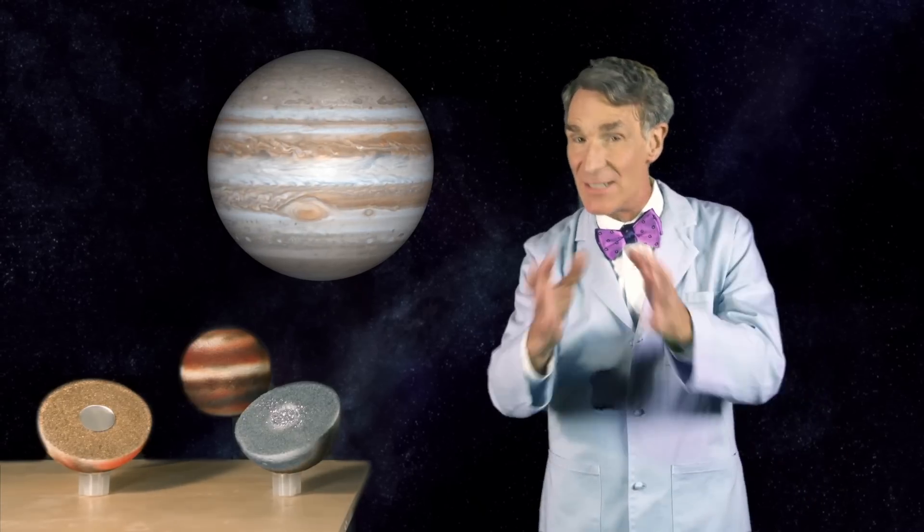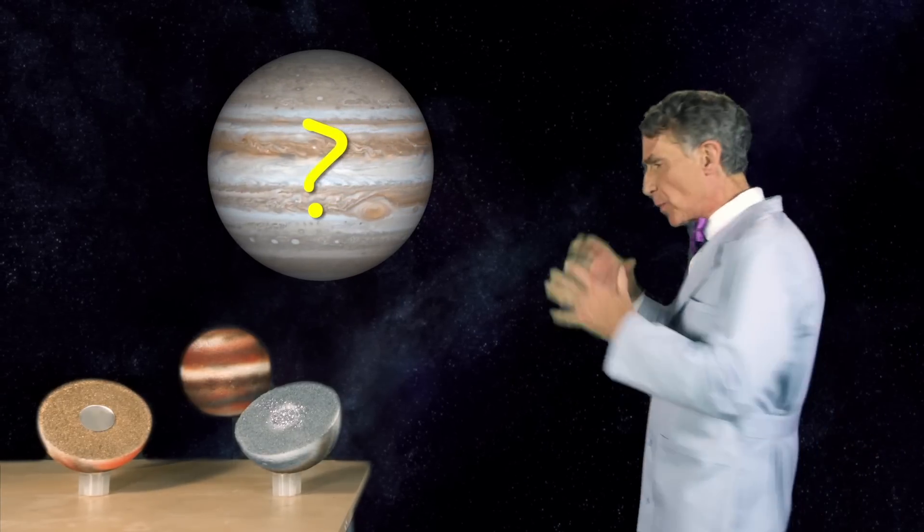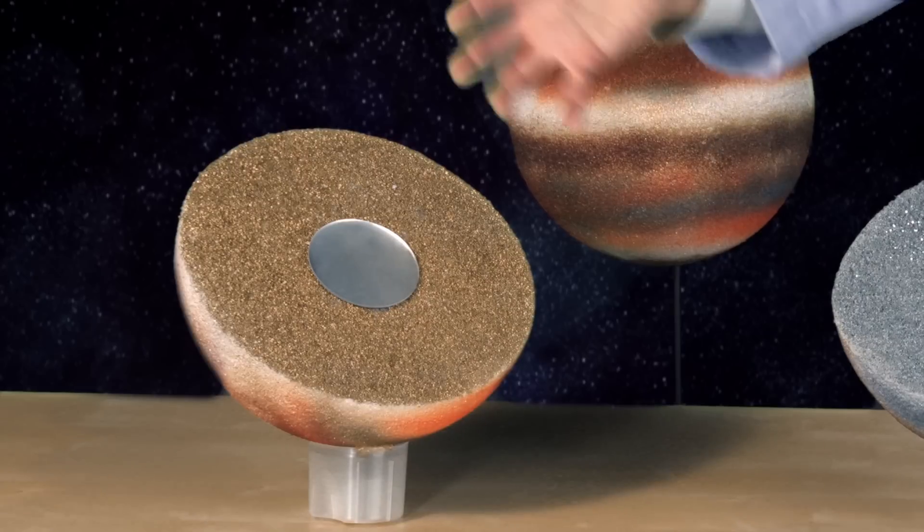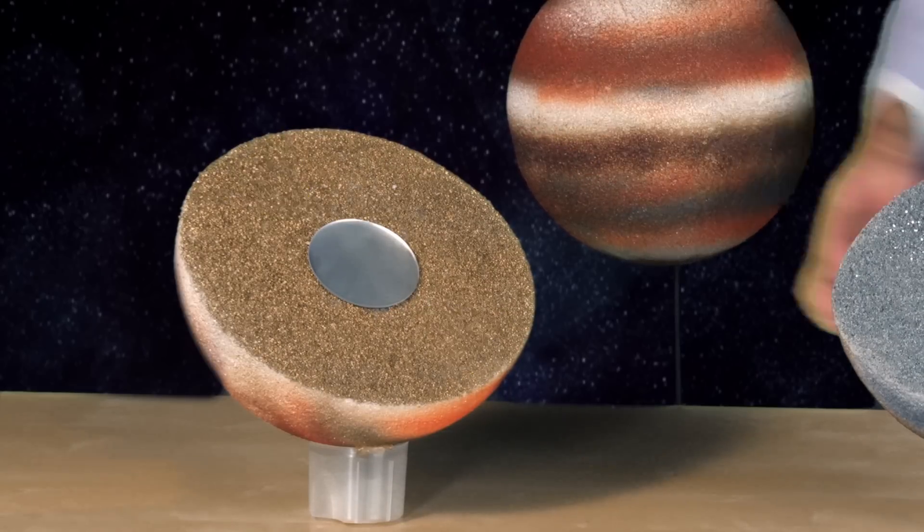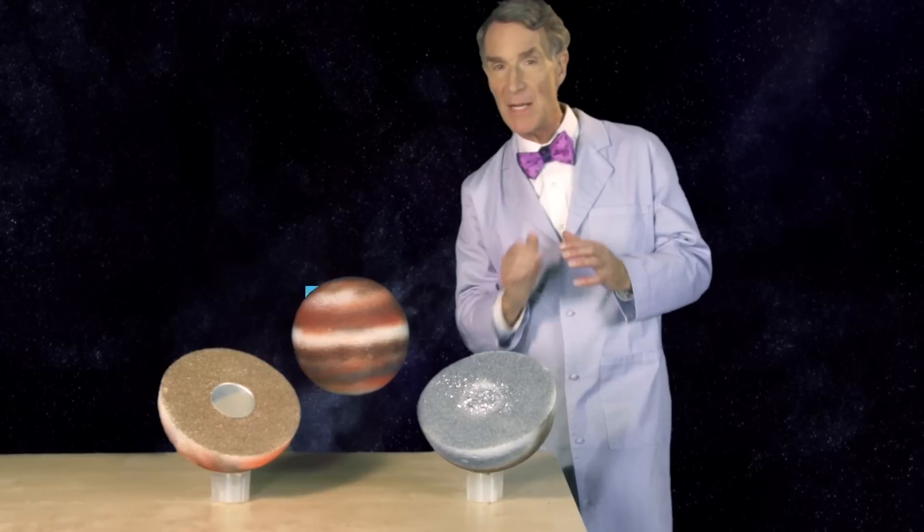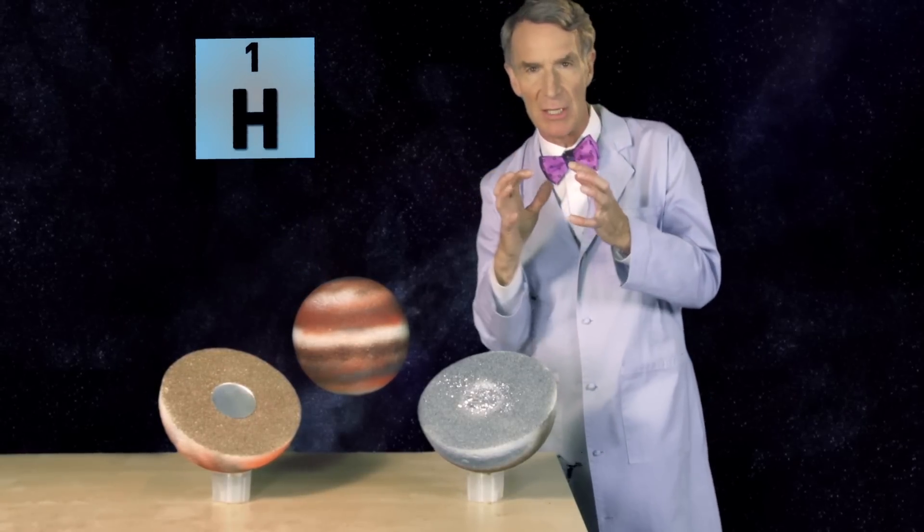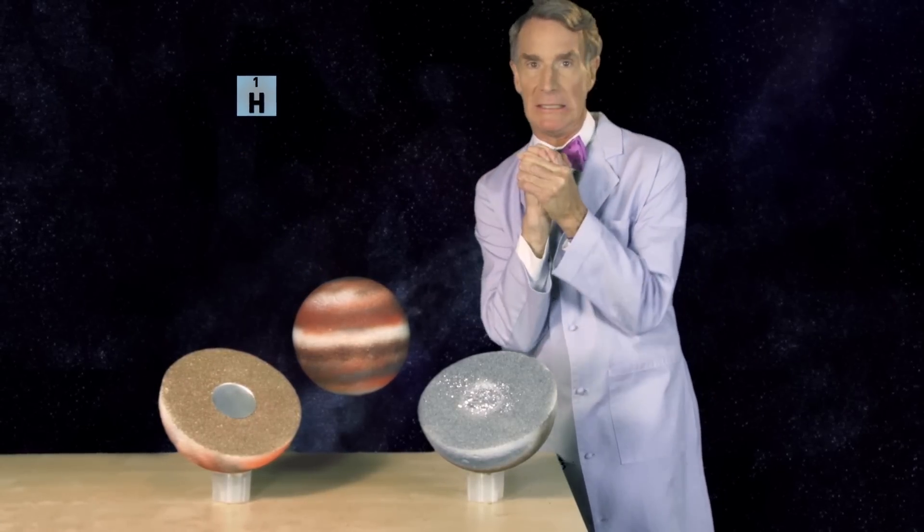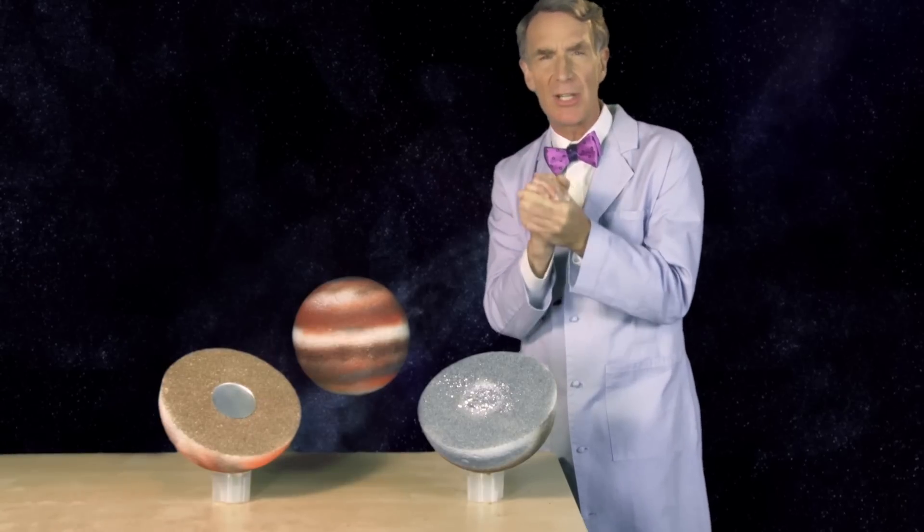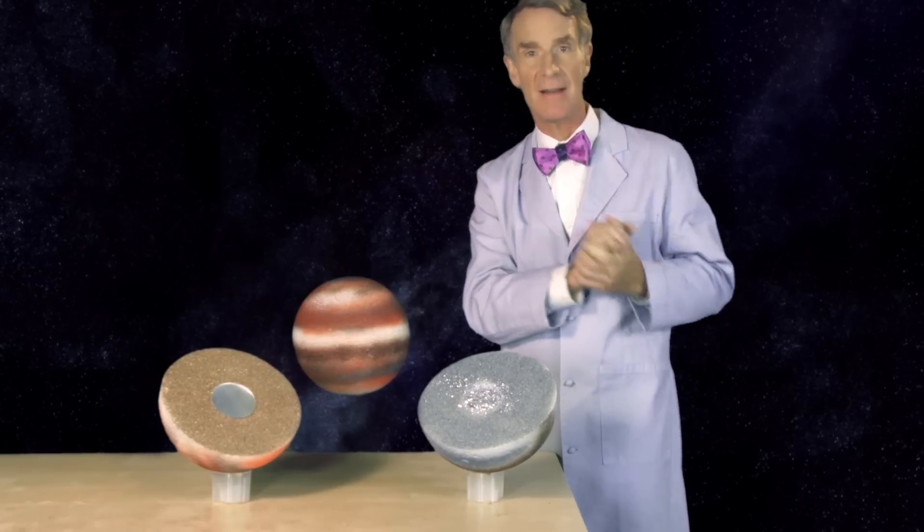We don't know what's inside Jupiter. Jupiter could have a core made of heavy metal that's sunk to the center. Or it might be that Jupiter has this exotic material that's hydrogen squeezed down to such a high pressure that the hydrogen acts like a metal, metallic hydrogen.